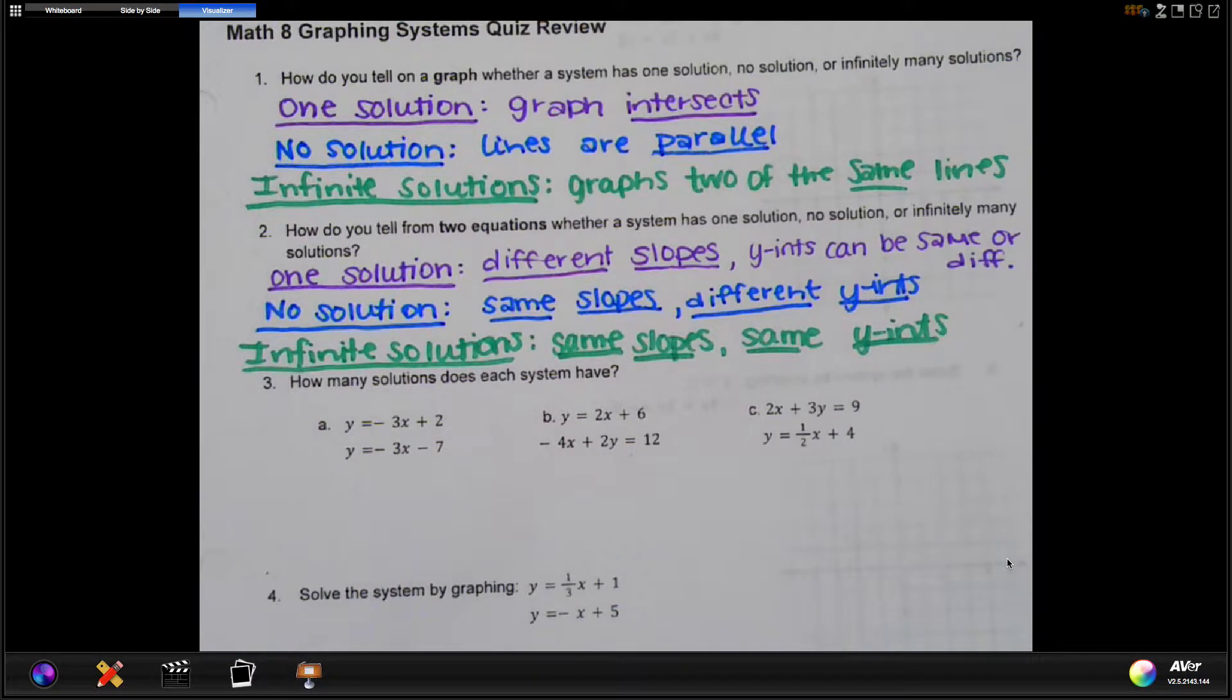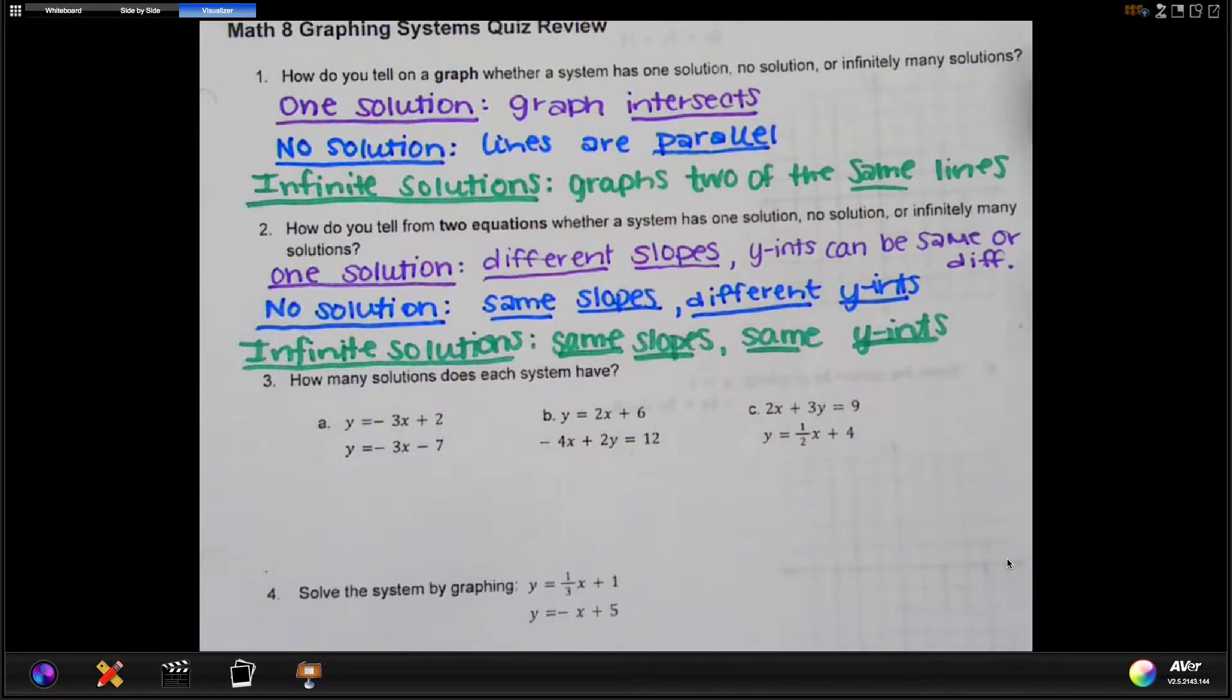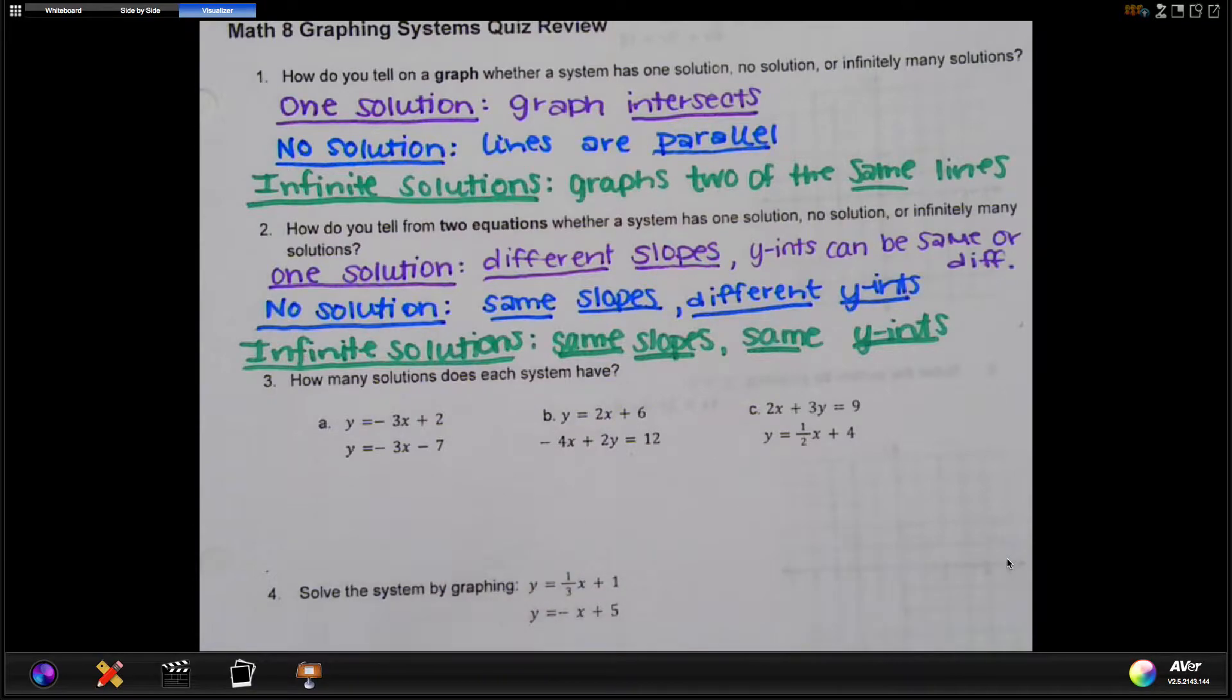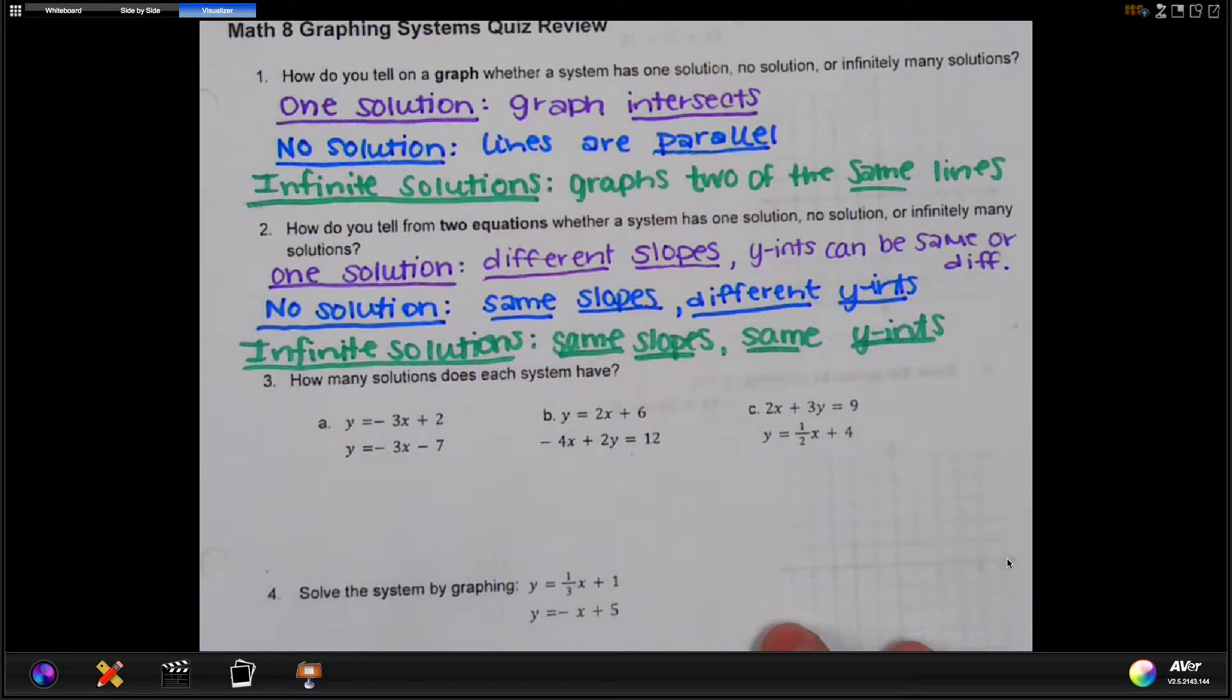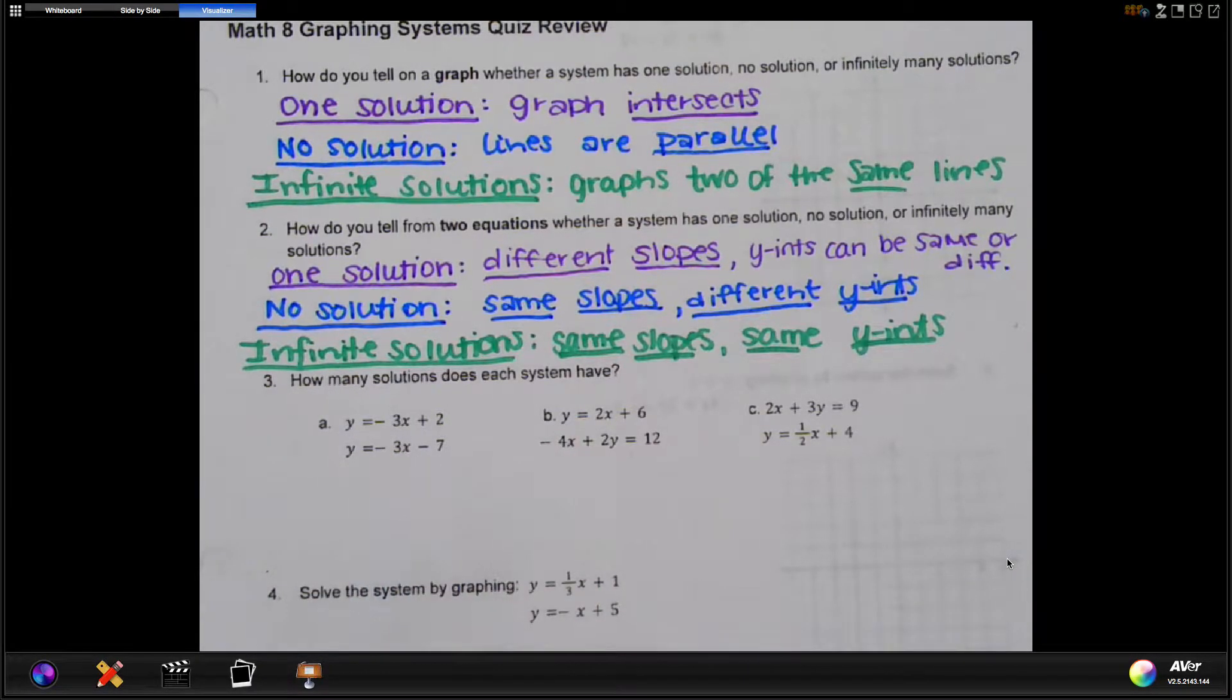Number one, how do you tell on a graph whether a system has one solution, no solution, or infinitely many solutions? So a system has one solution if the graph intersects, if it crosses. It has no solution when the lines are parallel, that means they will never cross. And it has infinite solutions if you graph one line and then you graph the second line and it lands exactly on the first.